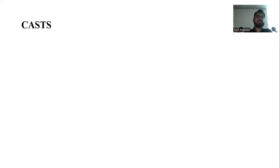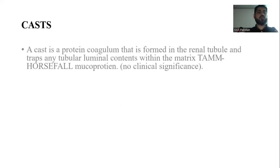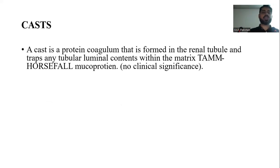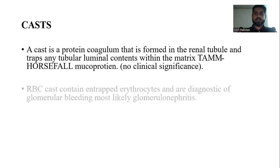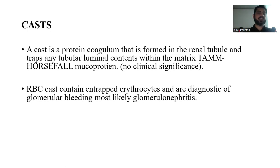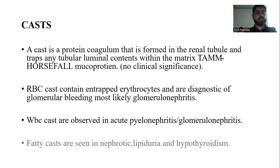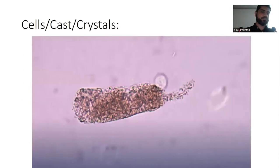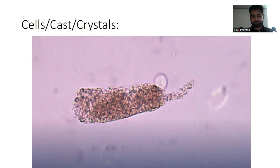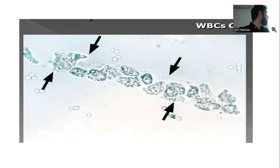Casts are protein conglomerates formed in the renal tubules, trapping tubular luminal content within a Tamm-Horsfall mucoprotein matrix — of no clinical significance in low quantity. RBC casts contain entrapped erythrocytes and are diagnostic of glomerular bleeding, most likely glomerulonephritis. WBC casts are observed in acute pyelonephritis or glomerulonephritis. Fatty casts are seen in nephrotic lipiduria and hypothyroidism.